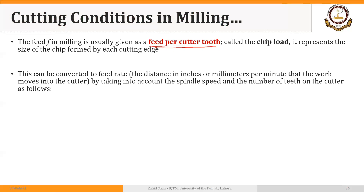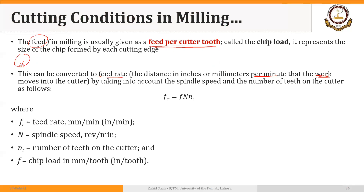This can be converted to feed rate: the distance in inches or millimeters per minute that the work moves into the cutter. The feed rate is equal to feed multiplied by RPM — the same as for turning and drilling — but it also has to be multiplied by the number of teeth on the cutter.